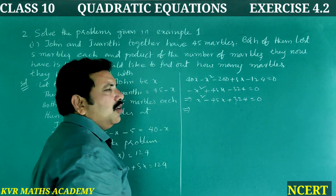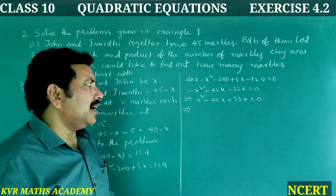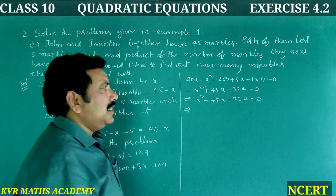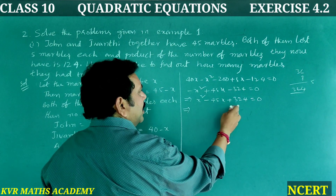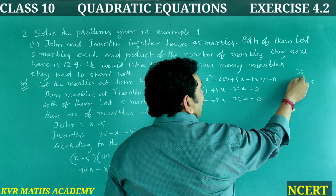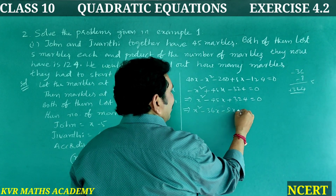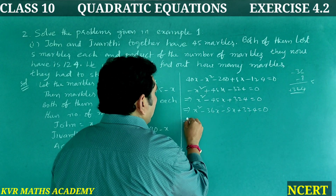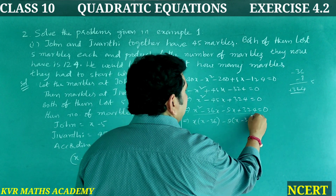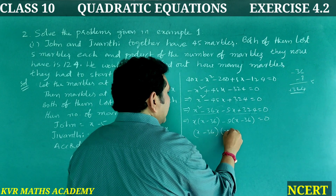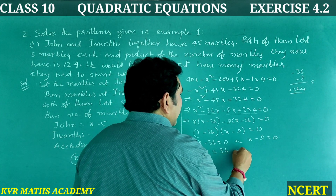Now find factors of 324 that add up to 45. We have 36 and 9: 36 plus 9 is 45, and 36 times 9 is 324. So: x squared minus 36x minus 9x plus 324 equals 0, giving x(x minus 36) minus 9(x minus 36) equals 0, so (x minus 36)(x minus 9) equals 0. Therefore x equals 36 or x equals 9.